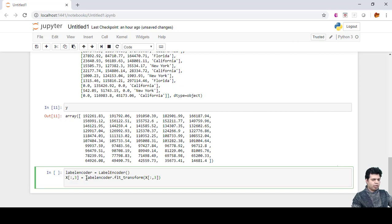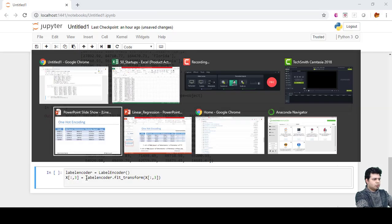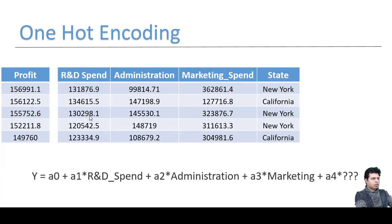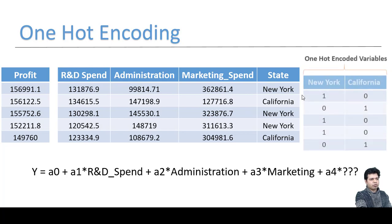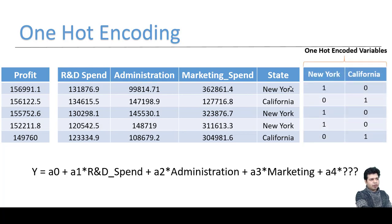Before the next statement, let me explain the concept of one-hot encoding. Our multiple linear regression equation looks like: Y = a0 + a1*(R&D spend) + a2*(administration) + a3*(marketing) + ... but we have a string value for state, so we need to convert it first. After label encoding, New York gets value 0, California gets 1, and Florida gets 2 — but these are ordinal values.